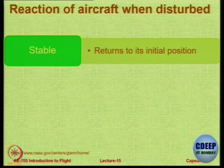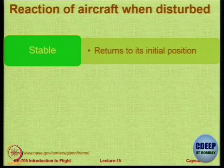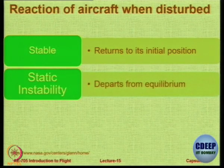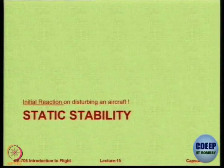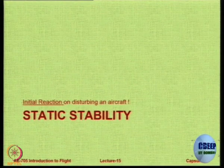If the aircraft does not return to the initial position, it can be considered unstable, but there is also a step in between called neutral. Static instability is when the aircraft departs from equilibrium. You also have dynamic instability, in which not only does it depart, it also becomes more and more unstable. The initial tendency is static and the final outcome is dynamic.